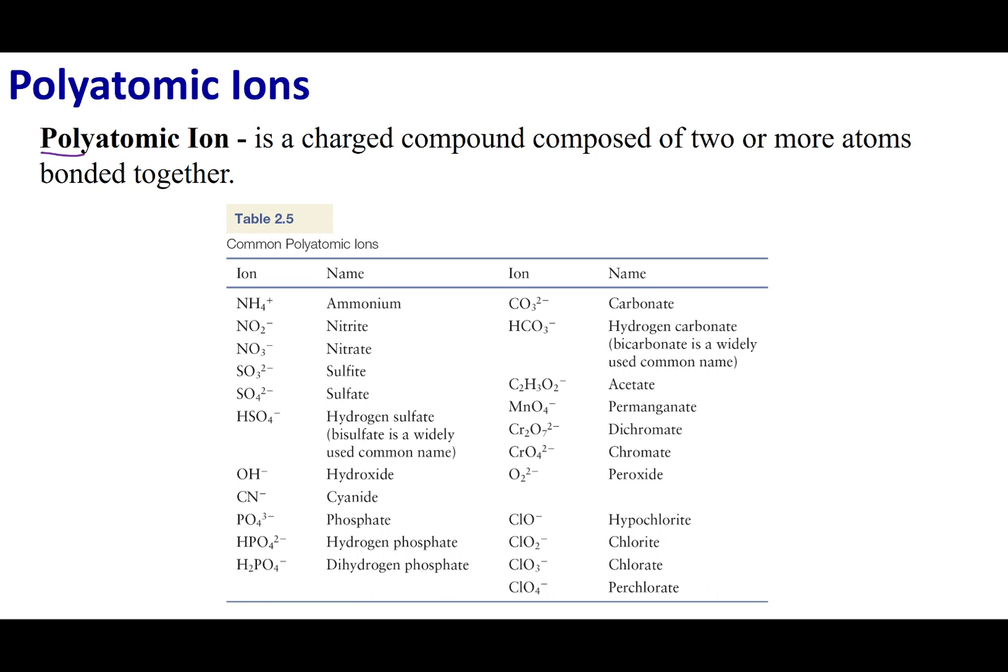So poly means many, atomic means I'm going to put atoms together, and this group of atoms are going to form an ion. So what these are is I'm going to get a bunch of atoms, I'm going to bond them together, and this whole package is going to be a charged species. So you can think of these as charged molecules.